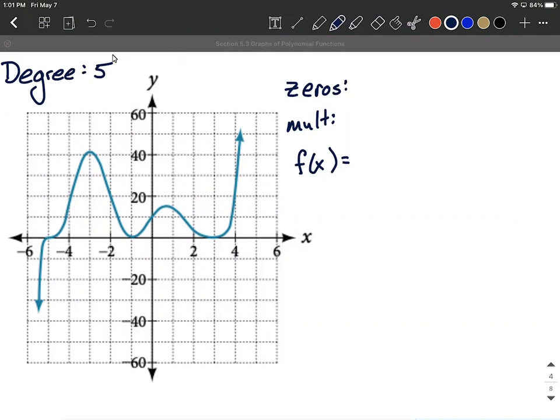We know it's degree five. What I want to do first is pick out the zeros or x-intercepts or roots, whatever we're calling them right now. So I'm looking at this graph, it looks like we have zeros or x-intercepts in three different places. I'm going to go ahead and list them out as negative five, negative one and positive three.